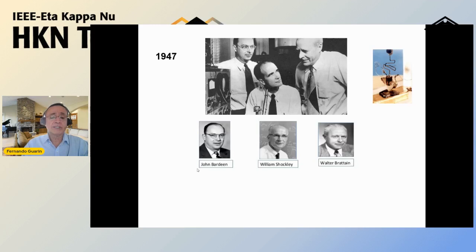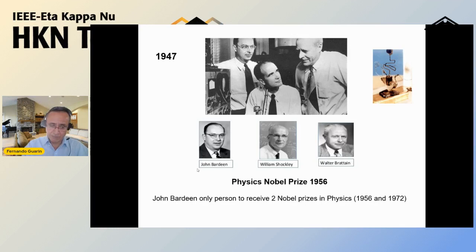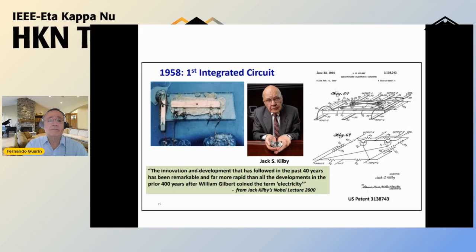We should point out that John Bardeen is the only person to ever receive two Nobel Prizes in physics — his second was in superconductivity in 1972, so he was a very prolific inventor. William Shockley's contribution was the junction transistor, which is the transistor as we know today, rather than the point-contact that was demonstrated first. He was a controversial figure because of his beliefs in race theory, but he was nonetheless a brilliant scientist, which brings us to 1958 at Texas Instruments, where Jack Kilby filed for the first patent on the integrated circuit.